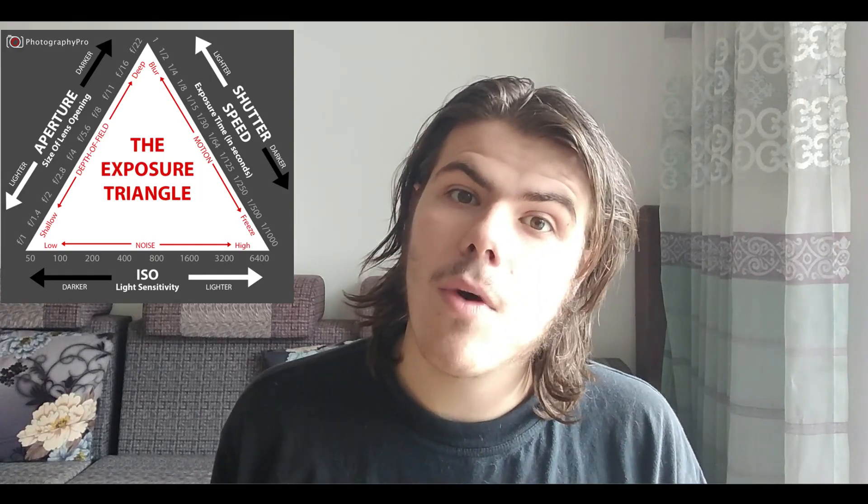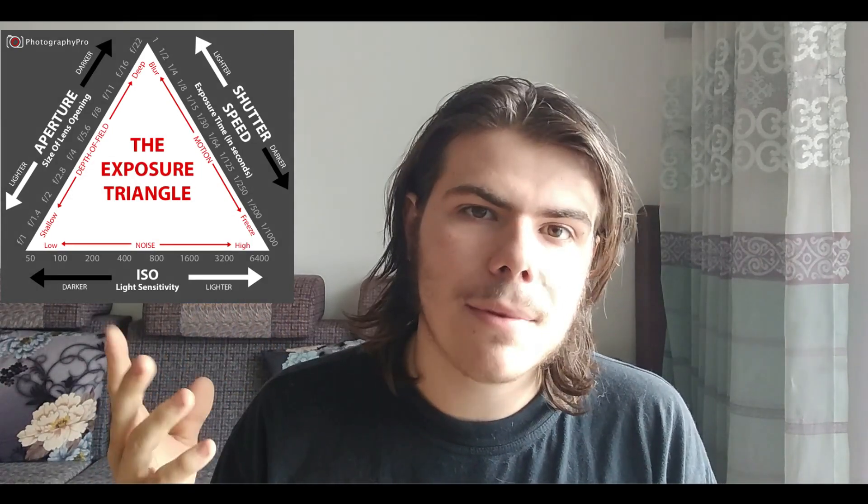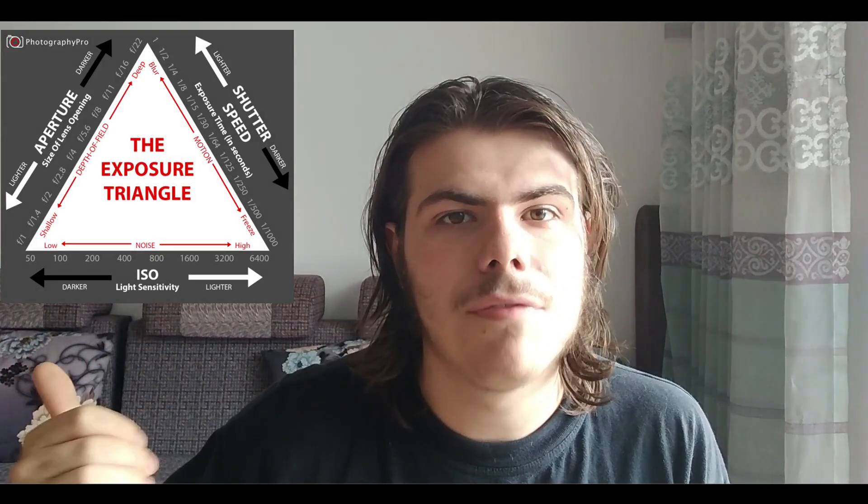ISO is something very tricky — you do not want to push it too high. My older camera can only go to 400 before getting grainy. Newer cameras in the $500–$800 range can go up to 12,000 without a big problem. Higher ISO gives you grainy footage, and nobody likes grainy footage. So keep the ISO as low as possible — ideally at 100, which is the base on most newer cameras.